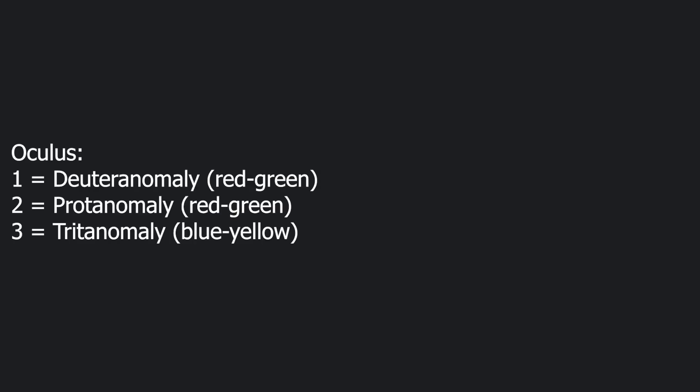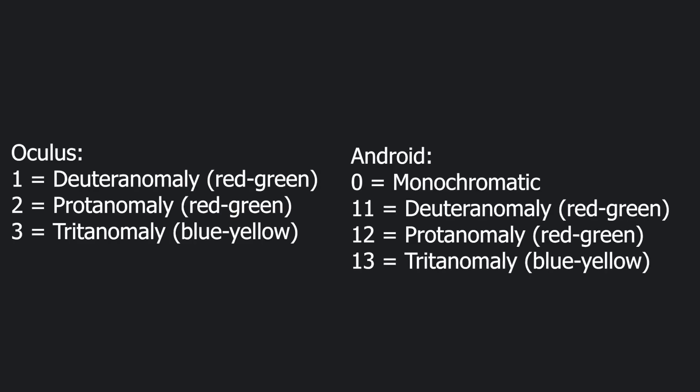It looks like Oculus will add a color correction feature to the Oculus Quest, which will compensate for the color blindness of its users. Normal Android already has these features, but they aren't optimized for the Quest display and mess up the visuals when enabled. Oculus added their own ones as IDs 1, 2, and 3, while the normal Android ones are 11, 12, 13 — with 0 just being a monochromatic filter.